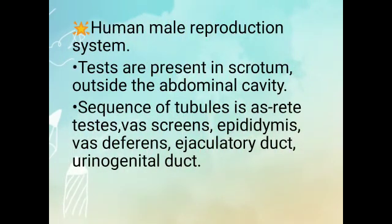Human male reproductive system. Testes are present in the scrotum outside the abdominal cavity. Sequence of tubules is as follows: Rete testis, Vas afferens — please note there is a typing mistake here — Epididymis, Vas deferens, Ejaculatory duct, and Urinogenital duct.